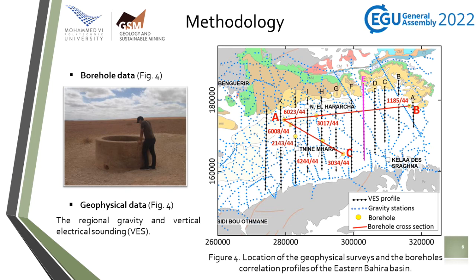For geophysical data, the eastern Bahia Basin has been the subject of numerous geophysical surveys, among which the most notable are the regional gravity and vertical electrical sounding (VES) coverage. This gravity survey was conducted by the Moroccan Ministry of Energy and Mines for mineral exploration purposes. The VES survey was carried out by the Tensift Basin Hydraulic Agency within the framework of a geological investigation project. The data recorded during these two geophysical campaigns are analyzed in this study.